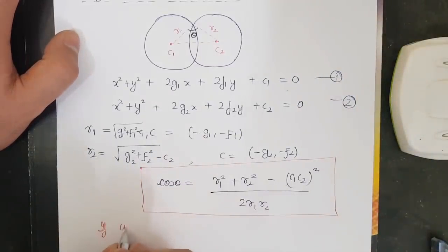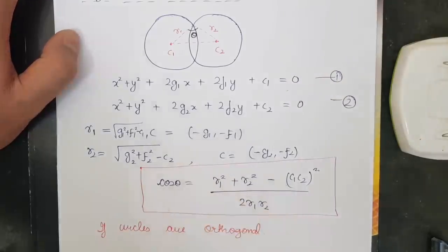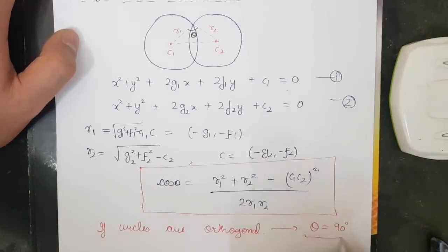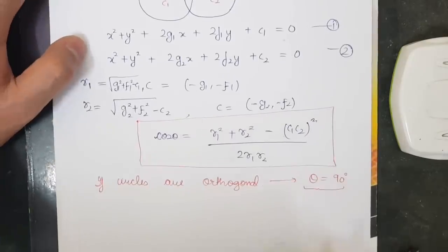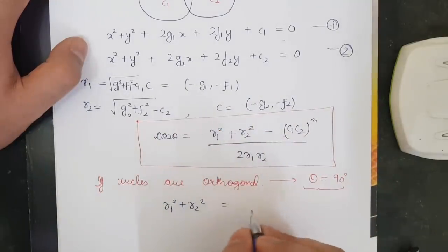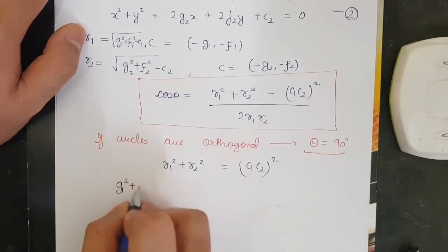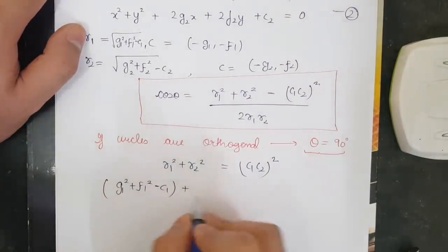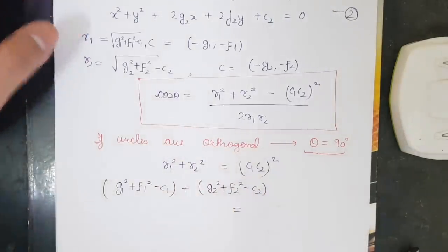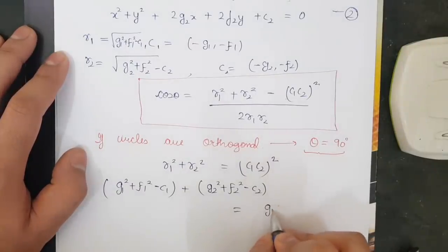Next, if circles are orthogonal, meaning perpendicular in nature, the angle between them equals 90°. Since cos 90° = 0, we get r1² + r2² = d(c1,c2)². Substituting: r1² = g1²+f1²−c1, r2² = g2²+f2²−c2, and d(c1,c2)² = (g1−g2)² + (f1−f2)².